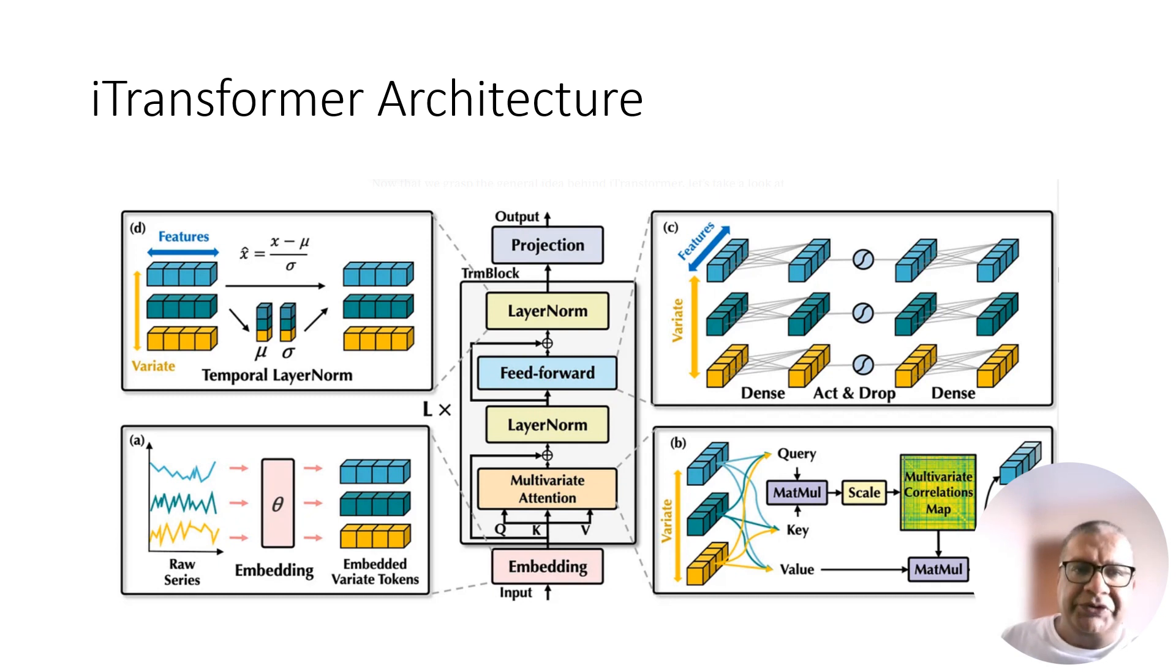Projection: From here, it's simply a matter of stacking many blocks composed of attention layer, layer normalization, feed-forward network, and layer normalization. Each block learns a different representation of the input series. Then the output of the stack of blocks is sent through a linear projection step to obtain the final forecast.